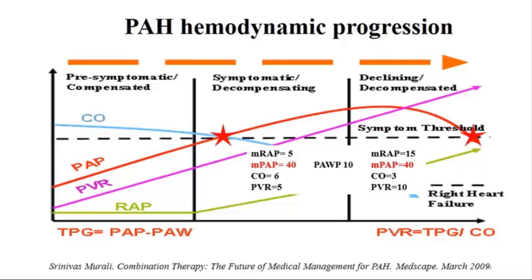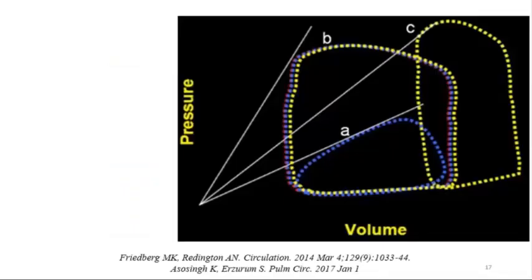You would treat these two patients differently based on functional class as well. Patients on the descending part of the curve tend to be sicker with more advanced functional class. Despite having the same mean pulmonary artery pressure, you can be at completely different stages of disease.